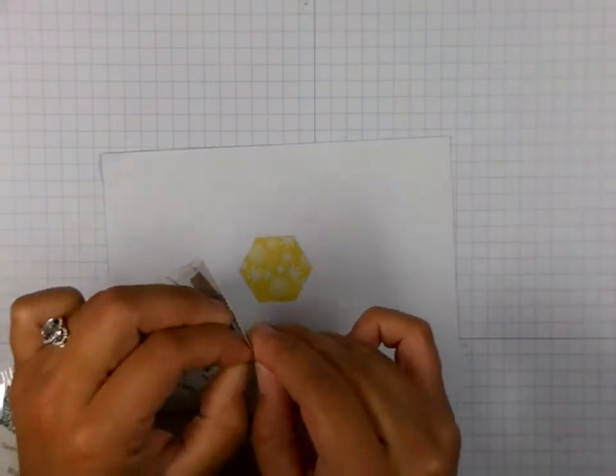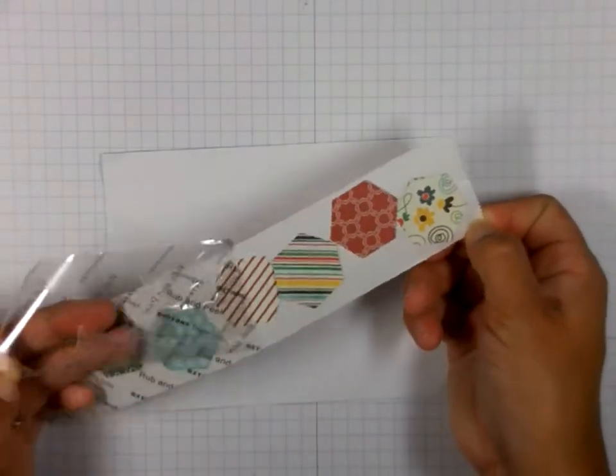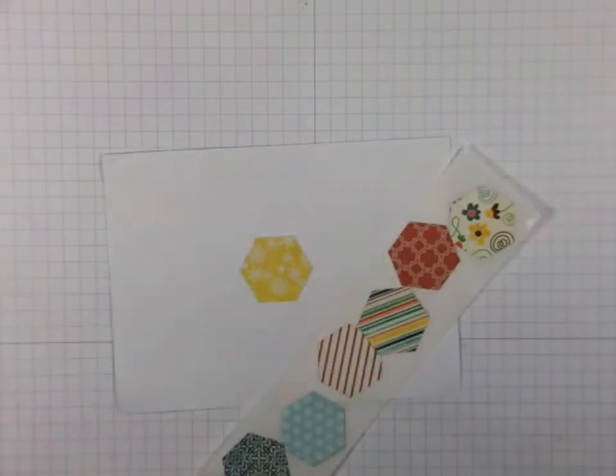Now you just rub on that plastic film to remove the excess adhesive. You peel away the plastic film and then what's left behind is your designer paper with the adhesive on the back.